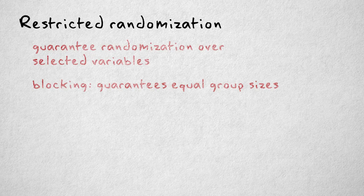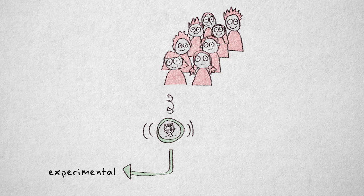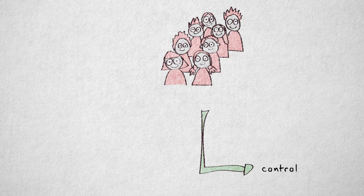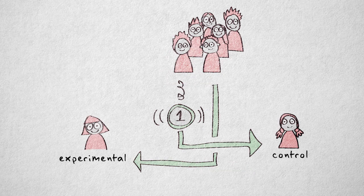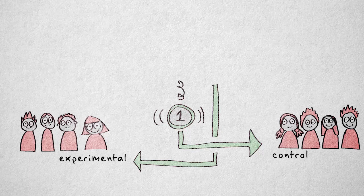We pair children up in blocks of two and flip a coin to determine where the first child goes. The second child is automatically assigned to the other condition. Repeat for all children and, if we have an equal number of participants, equal group sizes are ensured.